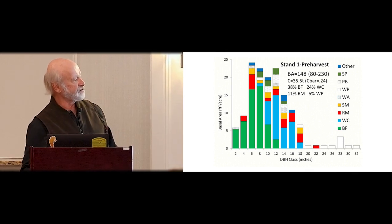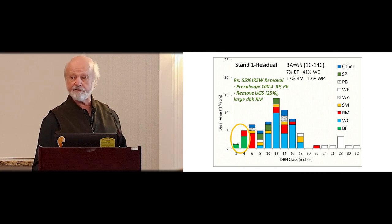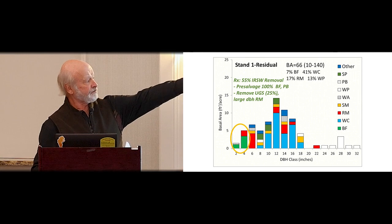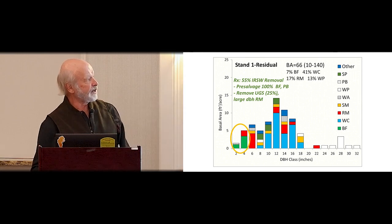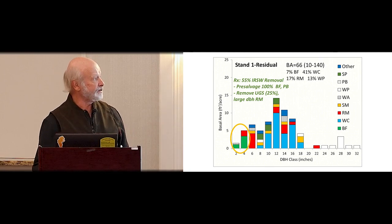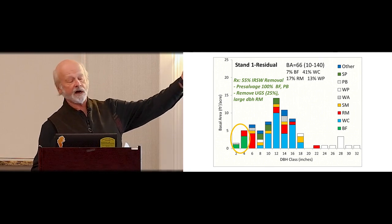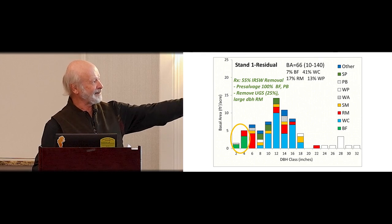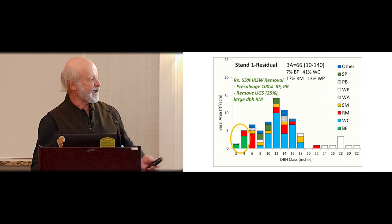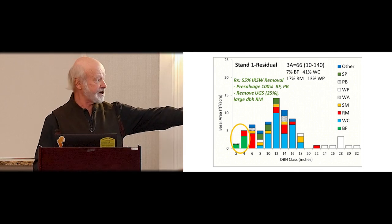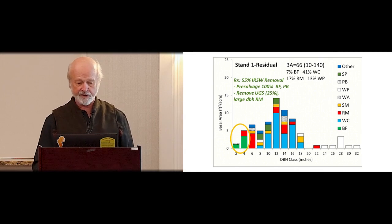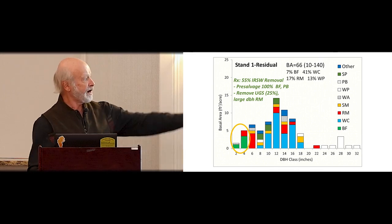After targeting the fir and birch, you can see the residual stand — a heavy removal, mostly after fir and birch. There's 7% fir left, some small diameter stuff, and the red maple. We also cut a lot of the lower-quality growing stock out of this stand.